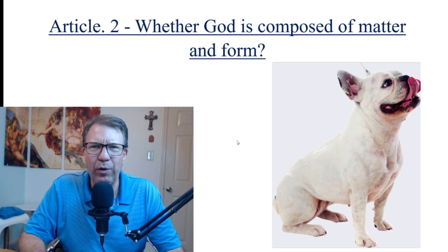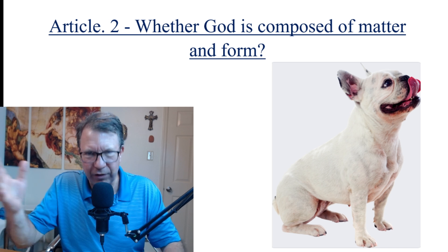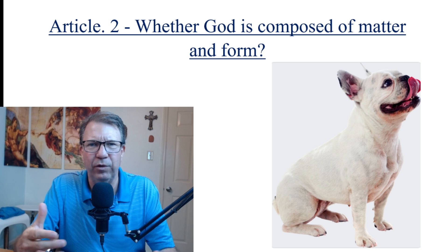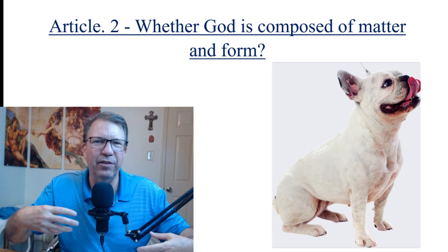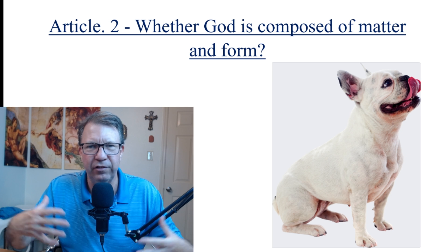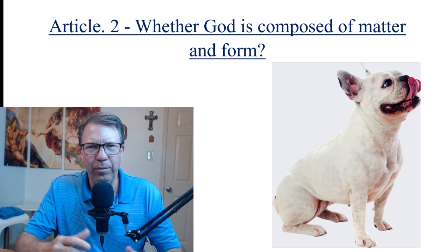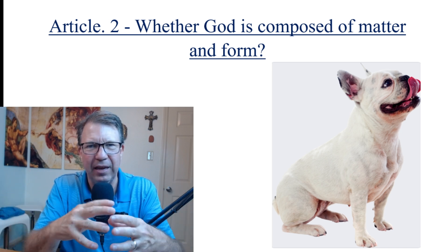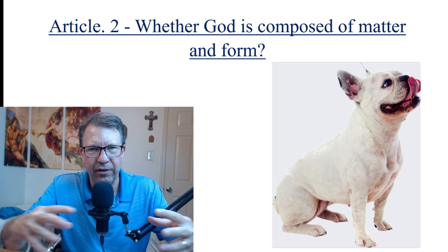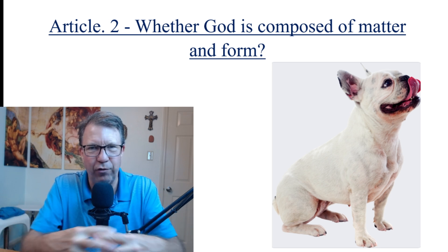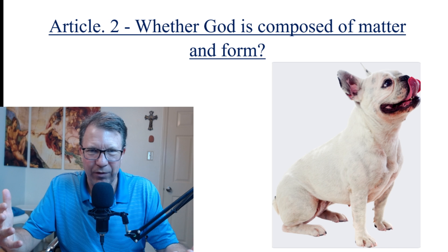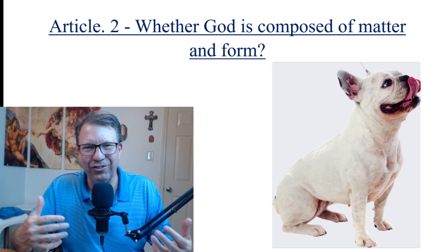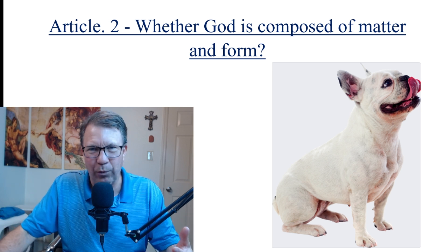Article two: whether God is composed of matter and form. This dog, for example, has matter and form. The matter is what Aristotle would call the material cause — the things it's made of, like the fur, the blood, the bones, the sinew, and muscle. And the form is 'dogness' — it's what it is. The two are dependent upon each other; they come together to form a composite. But that can't happen with God. God doesn't have parts; he doesn't have things that come together to make him, because he is altogether simple.